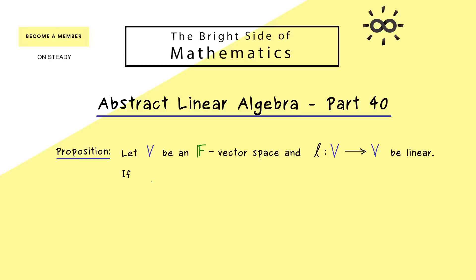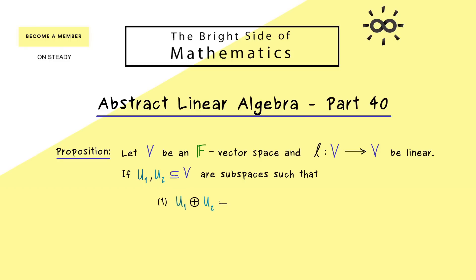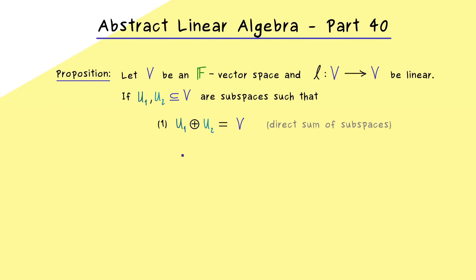This only makes sense if we have two special subspaces of V given. Let's call them U1 and U2, and these subspaces satisfy two properties. First, the direct sum of the two subspaces should be equal to V. This means both subspaces together span the whole vector space V and the intersection of U1 with U2 is only the zero vector — a decomposition of V into two parts.